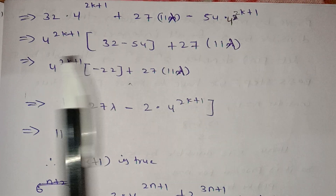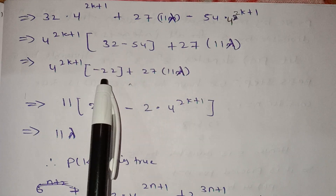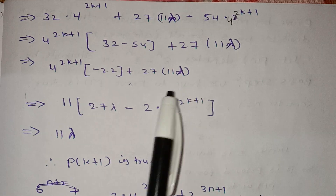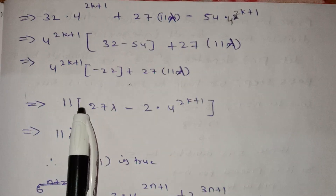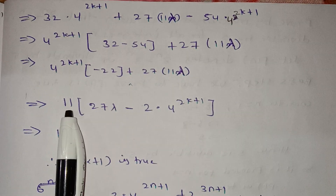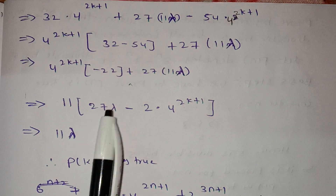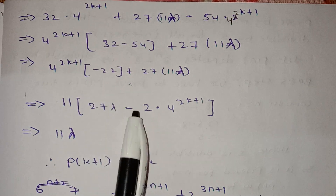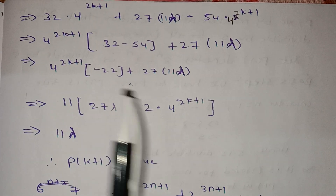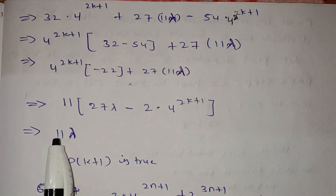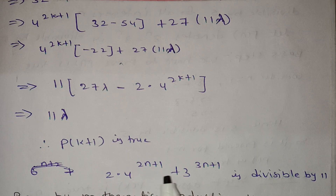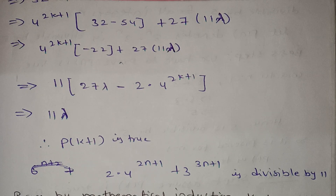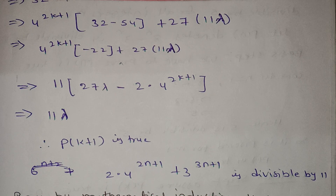So we have 4 power 2k plus 1 multiplied by 32 minus 54 plus 27 into 11λ, which gives minus 22 plus 27 into 11λ. Now 11 is a common factor: 11 into 27λ minus 2 into 4 power 2k plus 1. So 11 is divisible, meaning 2 into 4 power 2n plus 1 plus 3 power 3n plus 1 is divisible by 11. Hence P(k+1) is true. This is mathematical induction — this problem is very very important.